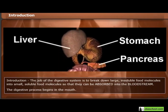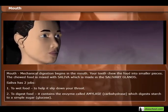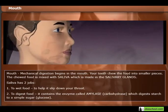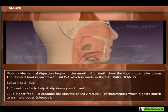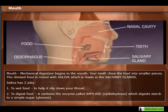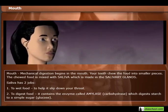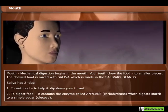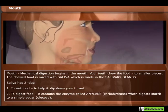The digestive process begins in the mouth. Mechanical digestion begins here — your teeth chew the food into smaller pieces. The chewed food is mixed with saliva, which is made in the salivary glands. Saliva has two jobs.